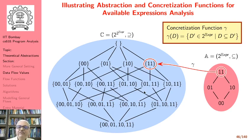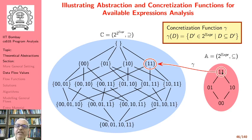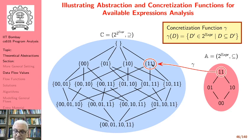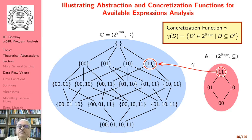Now let us look at the concretization function. The concretization function gamma(D) is the set of all states sigma such that beta(sigma) is a superset of D. So the concretization of 11 is just {11} — when we conclude both expressions are available at a program point, it must be that both are available along every path. Notably, the abstraction of the empty set was 11, but the concretization of 11 is a superset of the empty set. The concretization of 01 gives the set of all states where every state is a superset of 01.